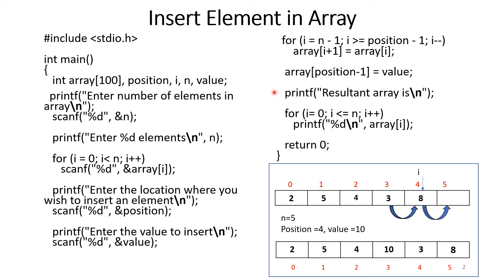Then we display the new resultant array using a for loop: i equals 0, i less than or equal to n, i plus plus, and printf array[i]. Why do we use less than or equal to n here instead of less than n? Because when we insert a new element, the array size increases by 1. Originally the array is index 0 to 4 (size 5), but after insertion i goes from 0 to the 5th index. I hope this concept of inserting an element in an array is clear.